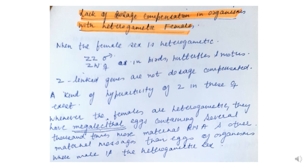There is also a lack of dosage compensation in organisms with heterogametic females, such as birds, butterflies, and moths. In these organisms, females are heterogametic (ZW) and males are homogametic (ZZ). In females, large X chromosomes called megalocythal X exist, and a kind of hyperactivity of Z in females compensates, as these females have megalocythal X chromosomes containing several thousand times more maternal RNA to compensate their one Z with two Z chromosomes in males.